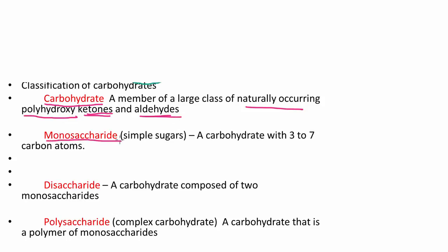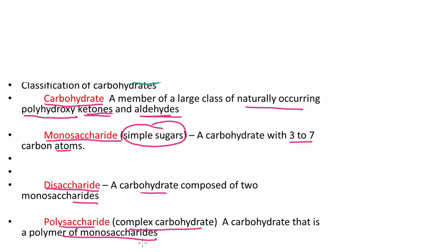The first type is what we call a monosaccharide, also known as simple sugars. These are carbohydrates that have three to seven carbon atoms. The second classification is a disaccharide, a carbohydrate composed of two monosaccharides. Then we have polysaccharides — these are our complex carbohydrates, a polymer of many monosaccharide units.